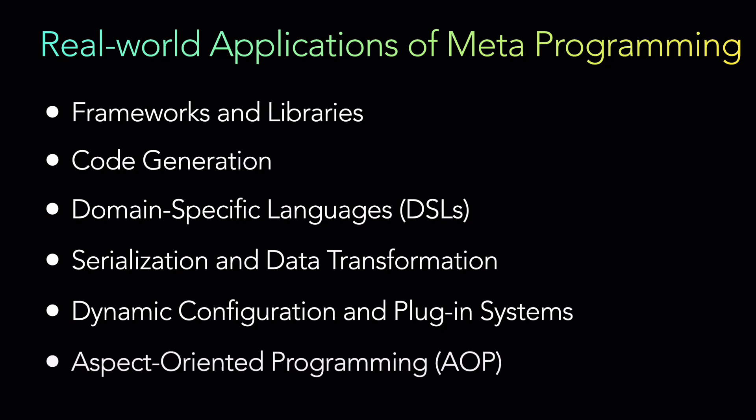Last but not least is aspect-oriented programming. We'll have a separate video on this bigger topic, but basically aspect-oriented programming is a paradigm that separates cross-cutting concerns from the core logic of an application. Metaprogramming is employed in aspect-oriented programming frameworks like AspectJ or PostSharp to modify the behavior of existing classes by adding or intercepting methods dynamically, allowing developers to handle cross-cutting concerns such as logging, security, and caching separately from the main application logic.